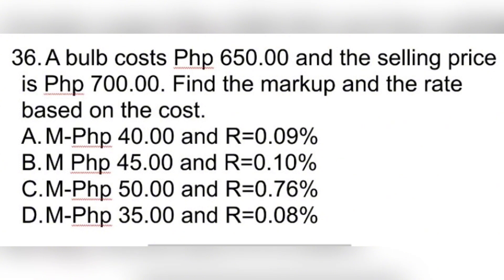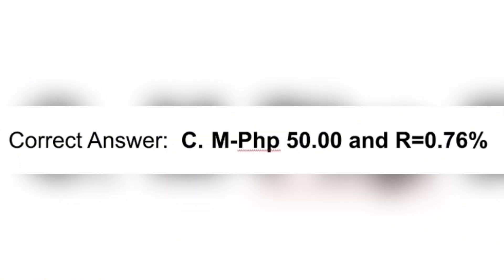Question 36. A bulb costs PHP 650 and the selling price is PHP 700. Find the markup and the rate based on the cost. A. M=PHP 40, R=0.09%. B. M=PHP 45, R=0.10%. C. M=PHP 50, R=0.76%. D. M=PHP 35, R=0.08%. Correct answer: C. M=PHP 50, R=0.76%.